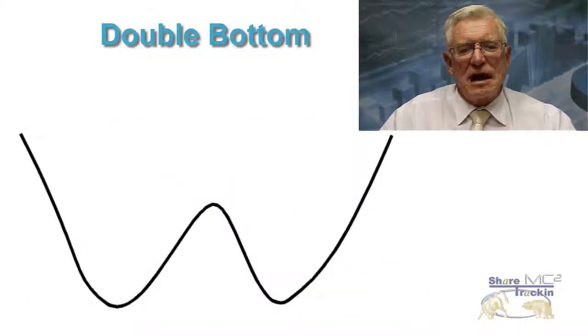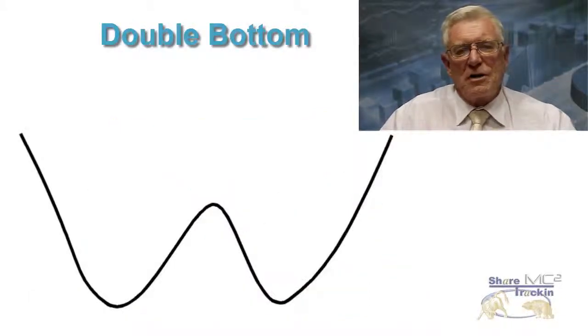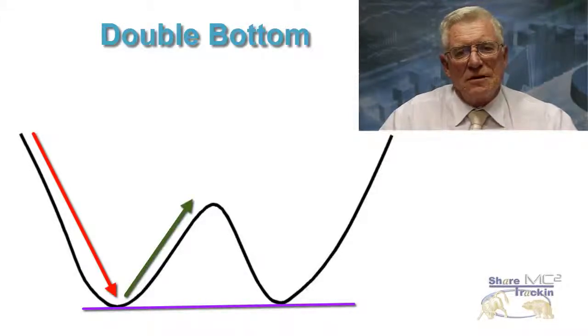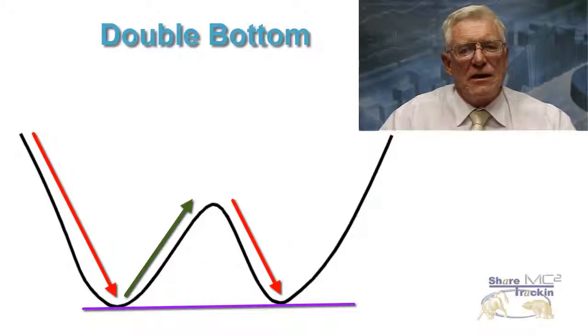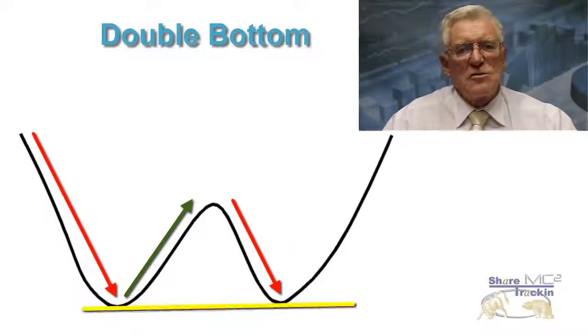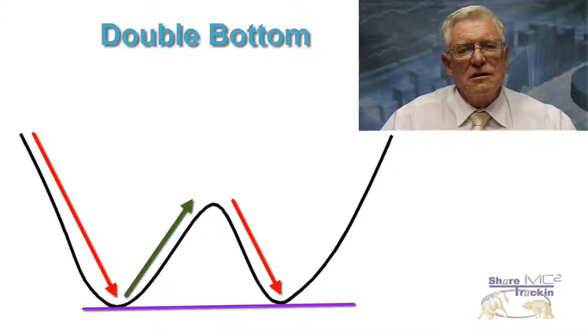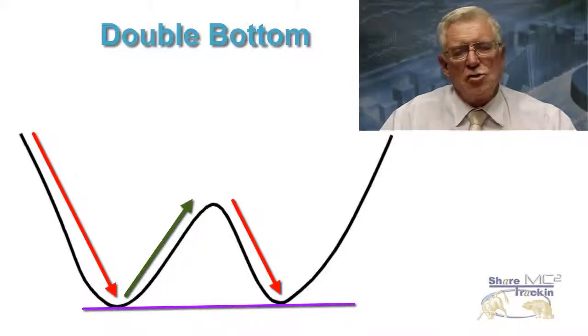The same thing happens in reverse, in other words a double bottom, where the share price falls to a particular place and then rises, but then falls back again to that same place creating that double bottom formation. Notice that the two bottoms are more or less at the same price. A double bottom formation is extremely bullish. It means that the share is probably going to go into a strong upward trend.